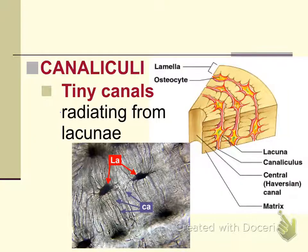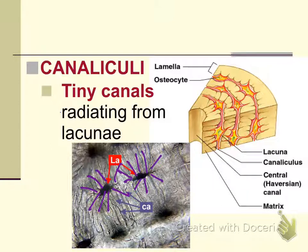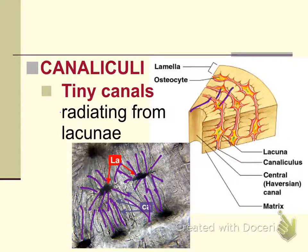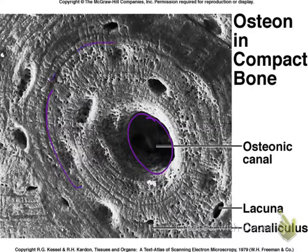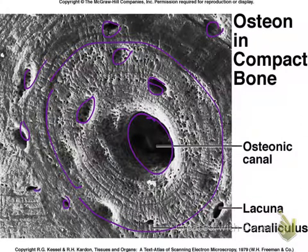Canaliculi are portions of the lacunae that radiate away from them — tiny canals, which is what canaliculi means. They connect blood supply from one lacunae to another. You can see the tiny lines radiating from the osteocyte inside the lacunae — those are the canaliculi. In an actual picture of an osteon, you can see the osteonic canal, the lamellae rings, the lacunae with osteocytes inside, and the tiny channels radiating from them — the canaliculi.